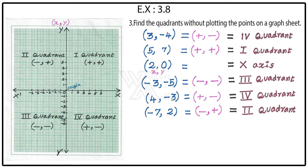Fifth point: 4 comma minus 3. 4 is a positive value, minus 3 is negative, so plus comma minus. Plus comma minus is the fourth quadrant.